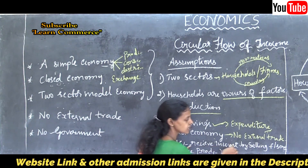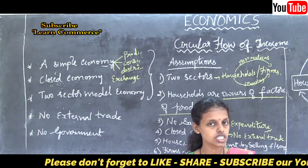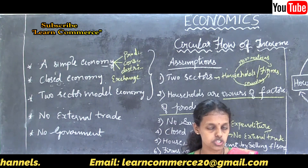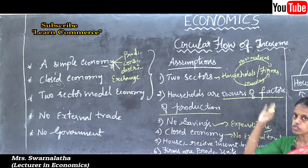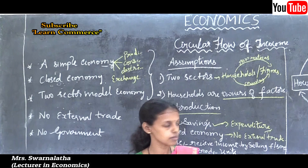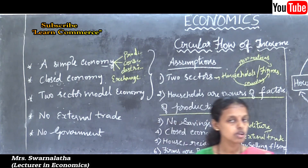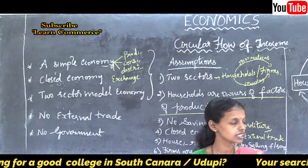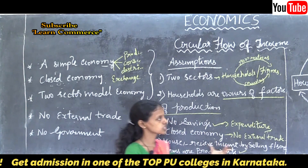Households receive income by selling factor services. Factor services include the factors of production — land, labour, capital, and organisation — provided by households to the firm. The firm makes factor payments for using these, which is income for the nation. Firms are the production units — factories that produce goods and services.